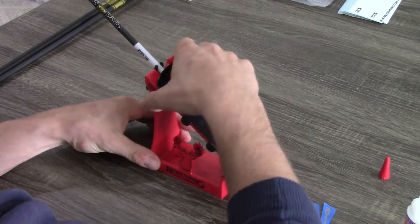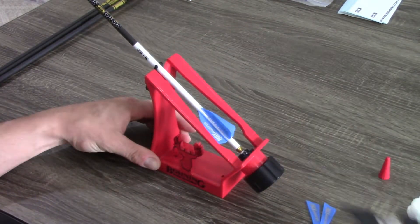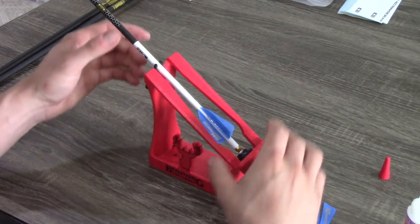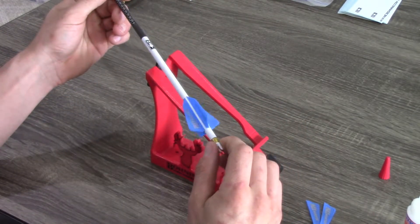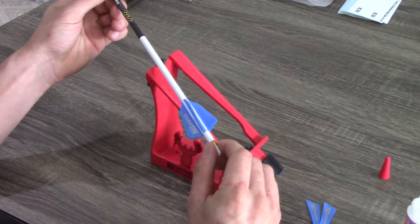After I've completed the fourth vein, just take the arrow out of the jig, and you can see I've got that nice three-degree helical fletching there. It should give me great stabilization.